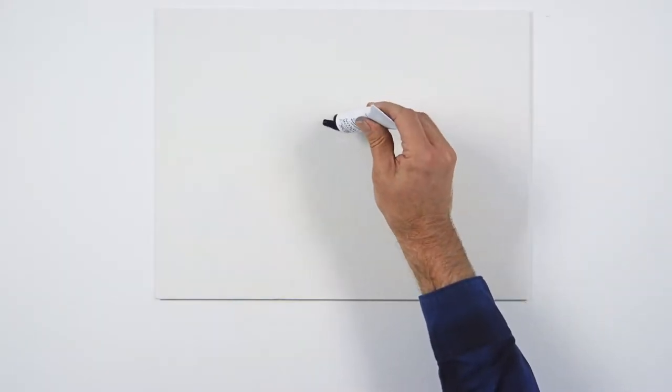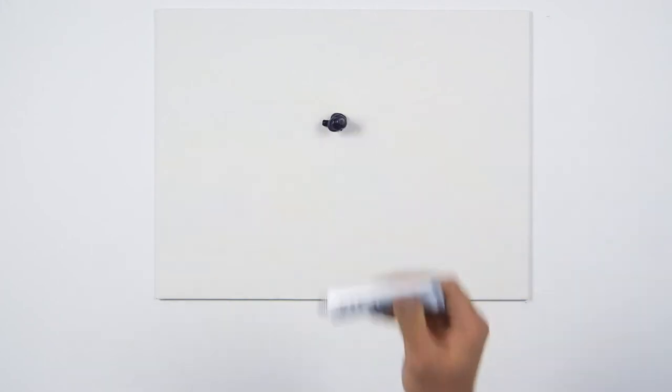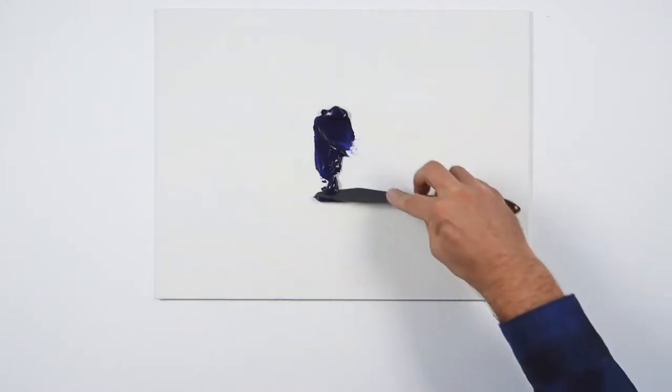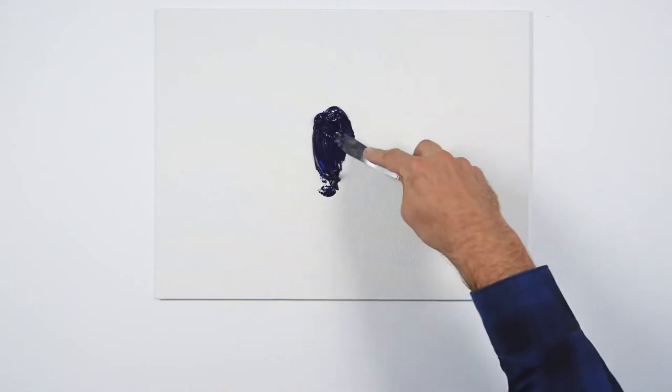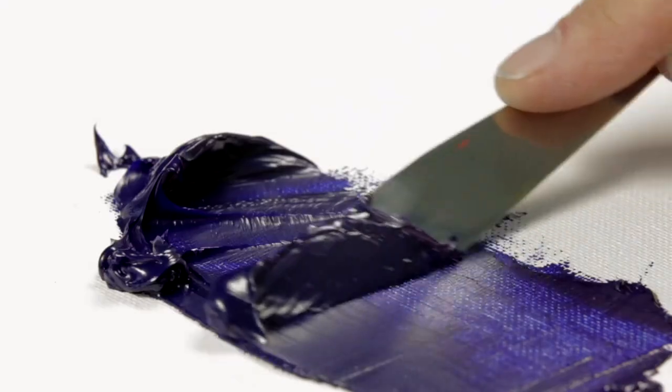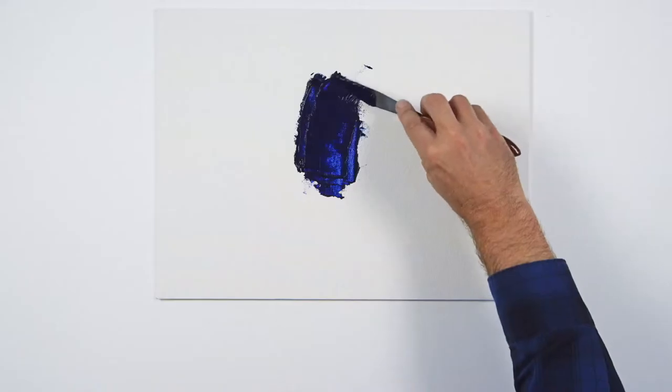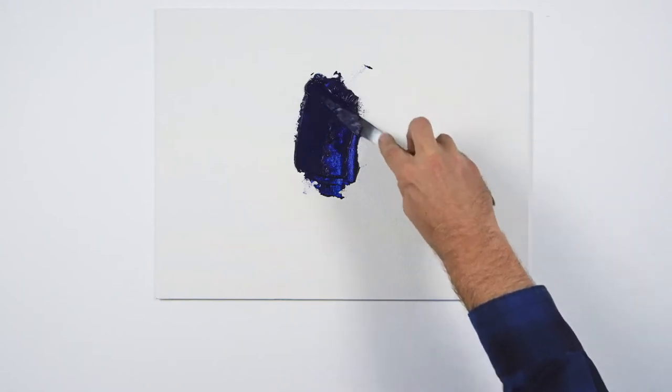Oil paint is comprised of pigment and a binder, a drying oil such as linseed oil. The oil absorption rate varies from pigment to pigment and has a bearing on how fat the colour is and in most cases how fast it will dry.